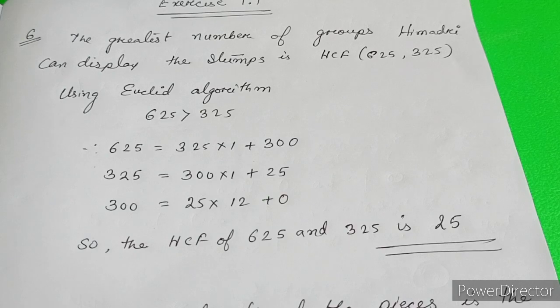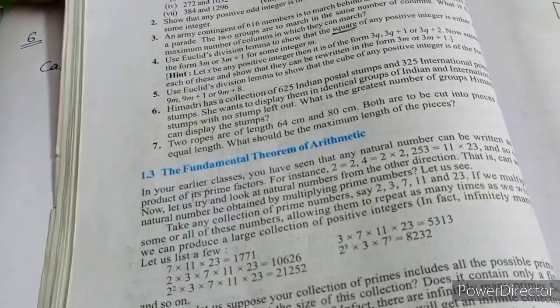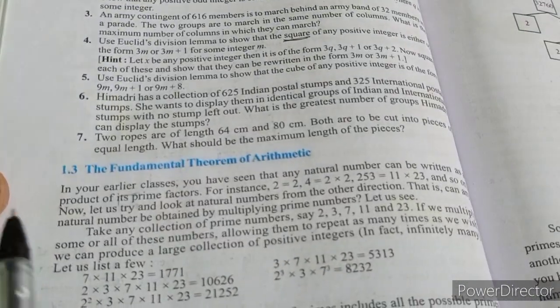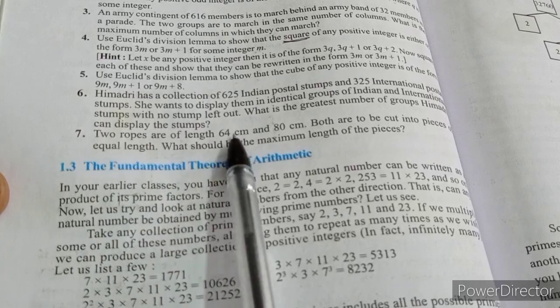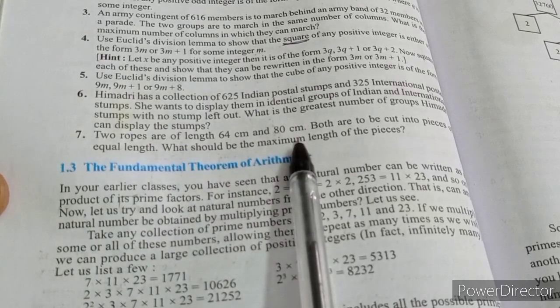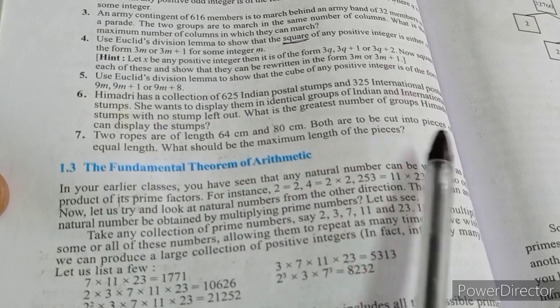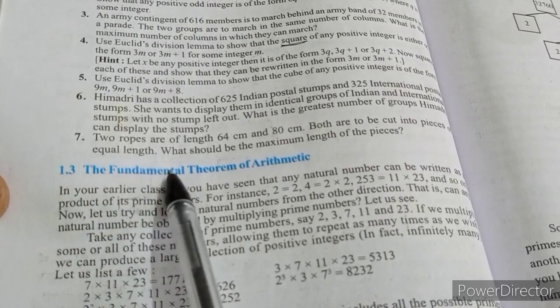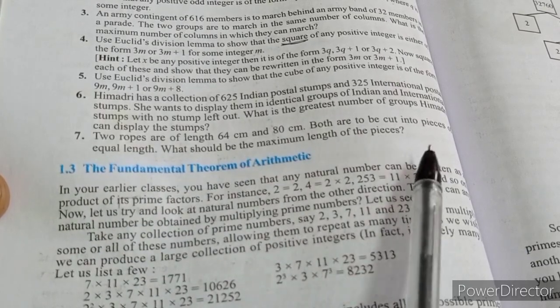I hope everyone is clear. Simple question, only the HCF we need to find. The second one, Question Number 7: Two ropes of length 64 centimeter and 80 centimeter both have to be cut into pieces of equal length. What should be the maximum length of the pieces?